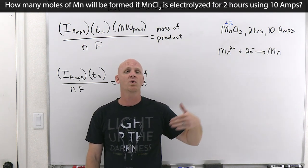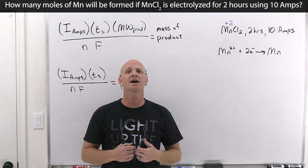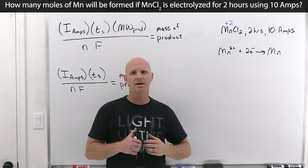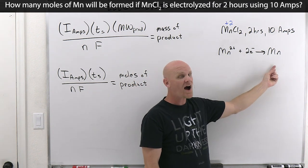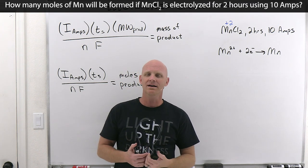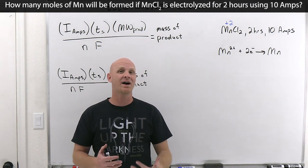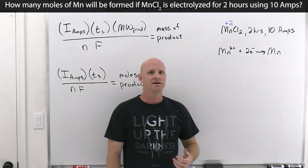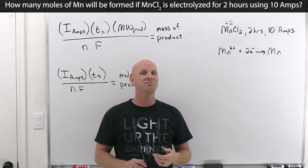It takes two moles of electrons to make one mole of manganese. If I gave you 10 moles of electrons, a two-to-one ratio gives you five moles of manganese. That's not so bad — the ratio of moles of electrons to moles of product is at the center of this entire calculation. However, actually getting the moles of electrons is the pain in the butt.